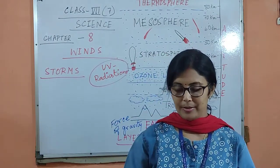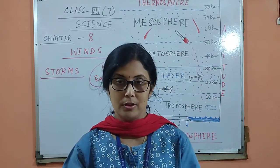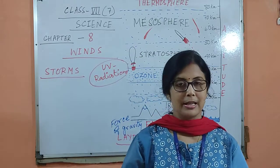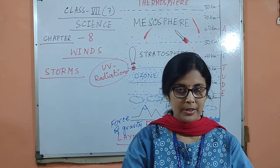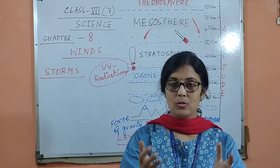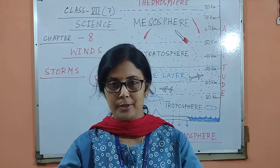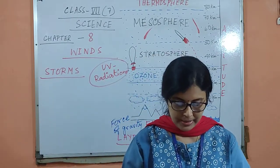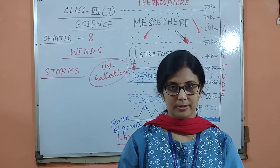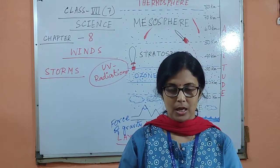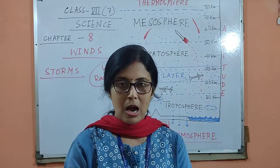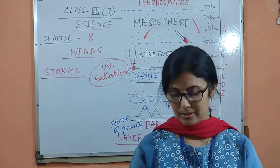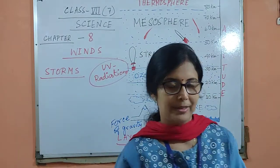Air is very important for us — it helps us for our living, and we get gases like oxygen and carbon dioxide from air. Now we are going to learn about the different properties of air. The first property is that air exerts pressure. We will learn how we can prove that air exerts pressure, but after a short break.